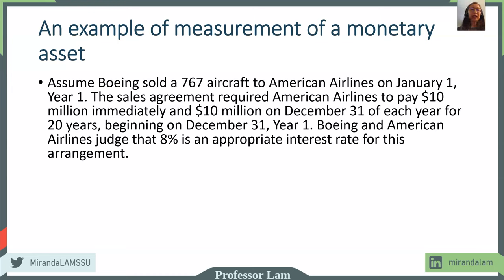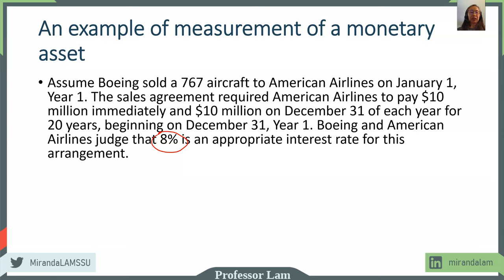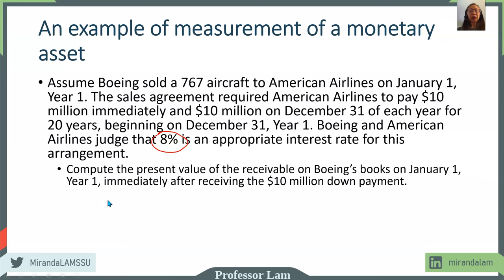The company we're going to look at is Boeing. Let's say Boeing sold a 767 aircraft to American Airlines. The terms of the sale are that American Airlines is going to pay $10 million dollars right away, then $10 million dollars at the time of acquisition, and then $10 million dollars every year at the end of each year for the next 20 years. Both parties will apply an 8% discount rate. We are asked to compute the present value from the perspective of Boeing.